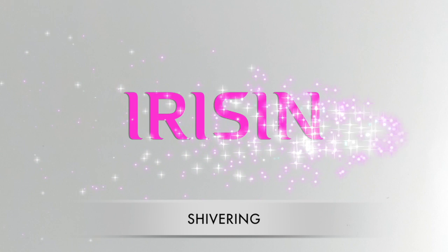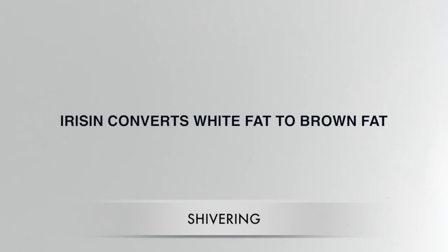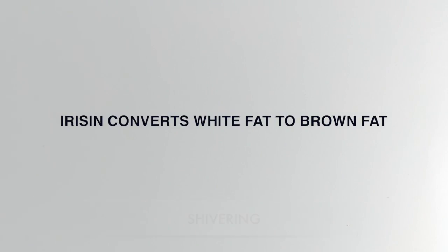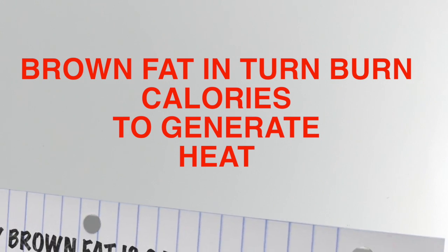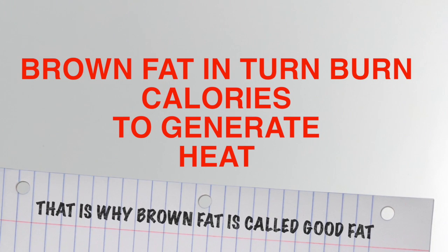Additionally, there is the irisin hormone, which is released by contracting muscles. This irisin hormone — also called the exercise hormone — has an amazing function in the shivering process. Irisin can cause white fat to take on characteristics of brown fat, which is able to burn energy and generate heat.